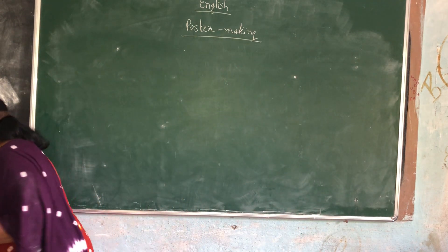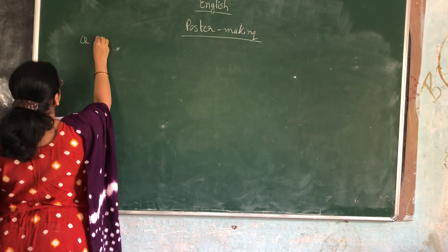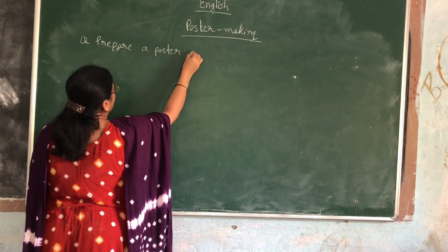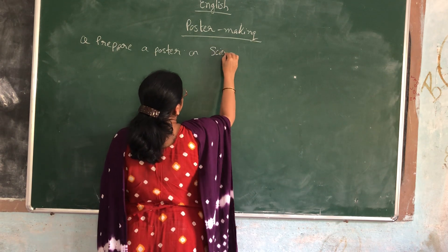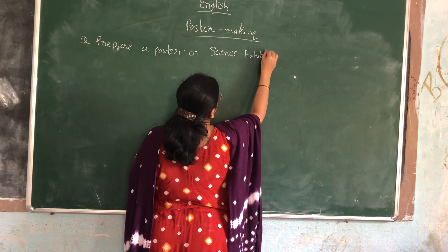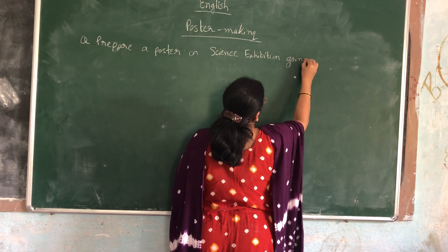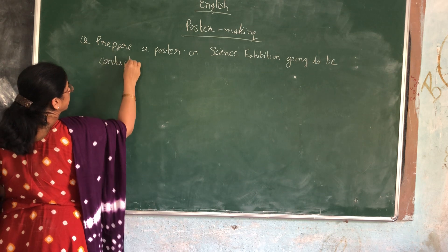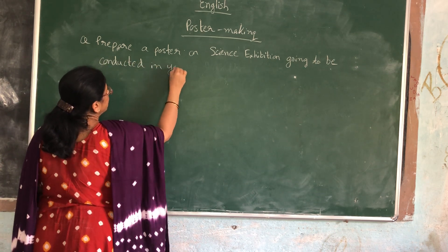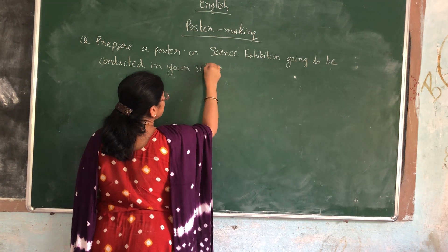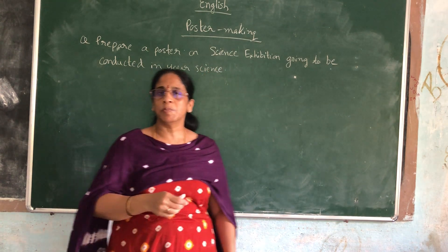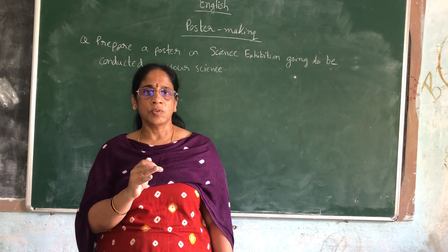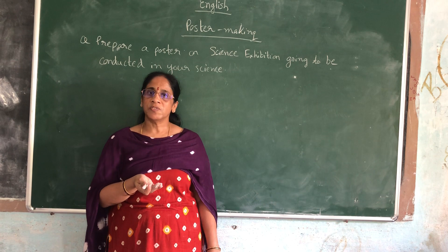The question is: prepare a poster on a science exhibition going to be conducted in your school. You can mention everything you are going to do on that day — on which day it is taking place, who can participate, and who the invited people are. You can write all these things in the poster. We will continue with our next discourse in our next class.